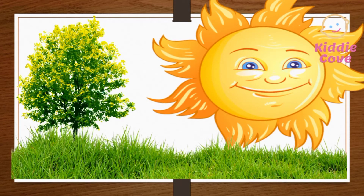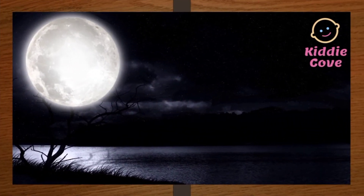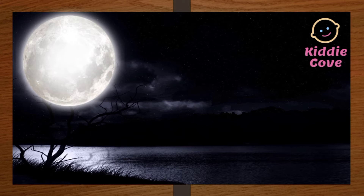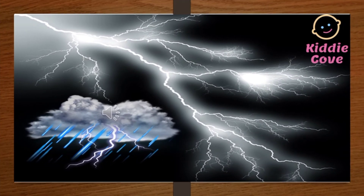Sun — Sun is a natural source of light. And moon — moon is also a natural source of light. Skylight is also a natural source of light.